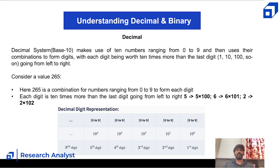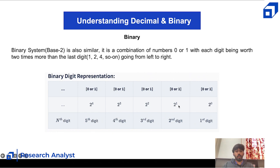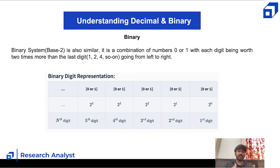Now in a similar fashion, binary is a combination of 0s and 1s with each digit being worth two times more than the last. The first digit is 2^0 = 1, next is 2^1 = 2, then 2^2 = 4, 2^3 = 8, 2^4 = 16, 32, 64, and so on. The only difference between decimal and binary is that decimal is base 10 and binary is base 2.